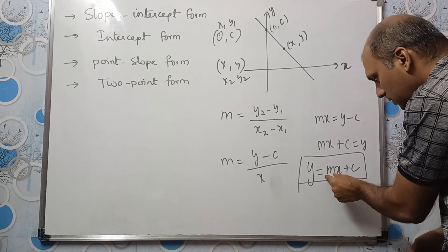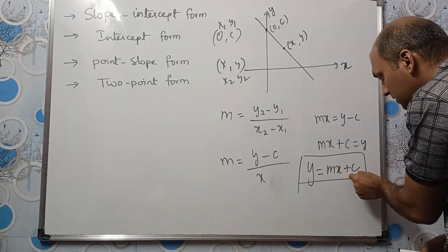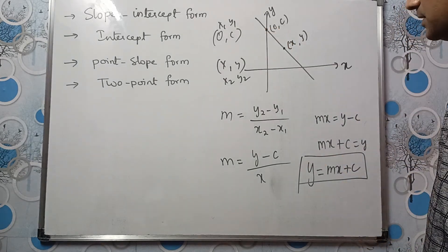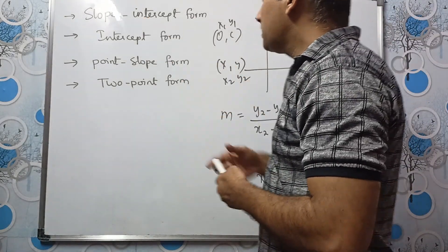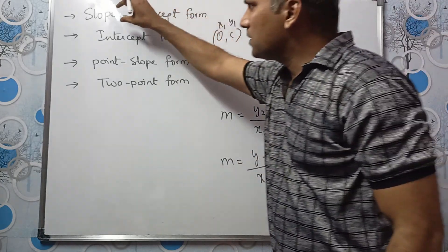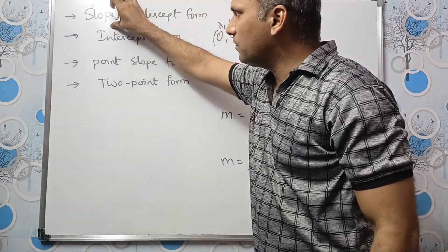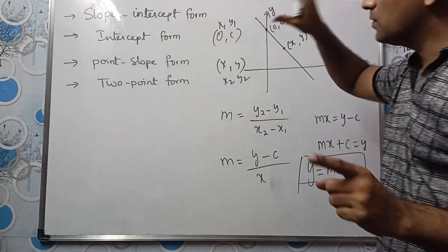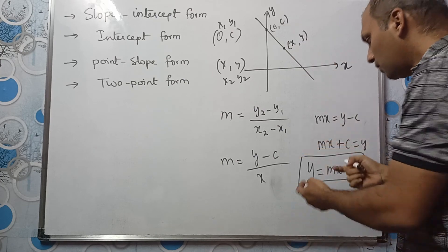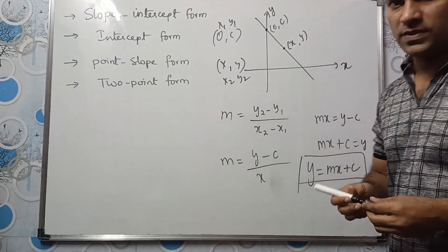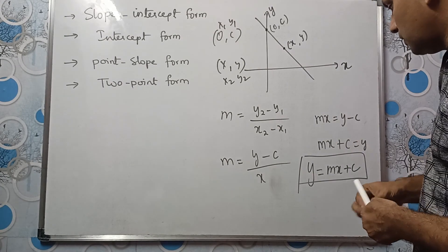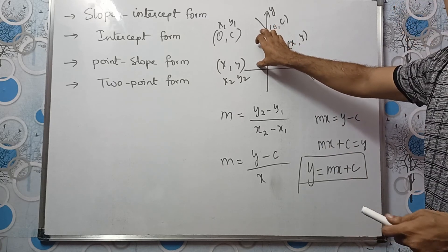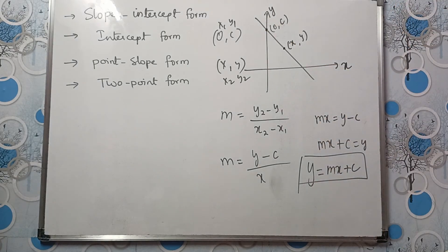So when slope and y-intercept are given, you need to use slope-intercept form to write the equation of a straight line: y = mx + c. Here m is the slope and c is the y-intercept.